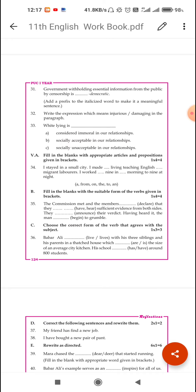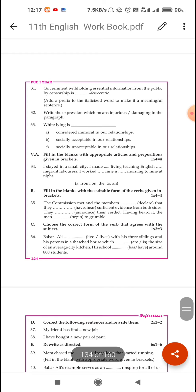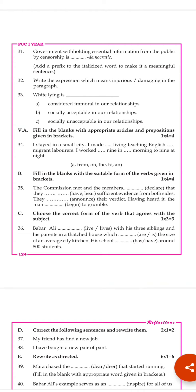Look at question number 34. The instruction goes like this: fill in the blanks with appropriate articles and prepositions given in brackets. It doesn't matter whether you know all of them, but you must be in a position to choose. In brackets, six options will be given, and you are to use only four to fill in the four blanks — four marks.